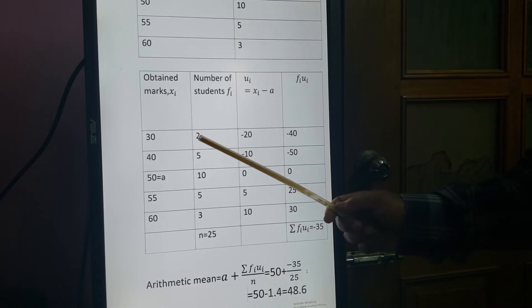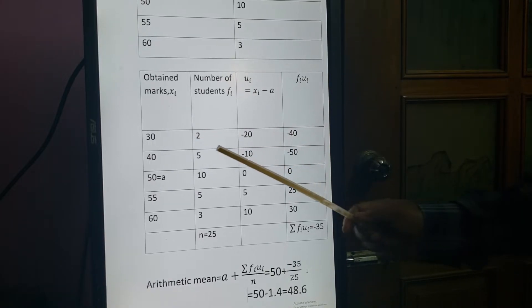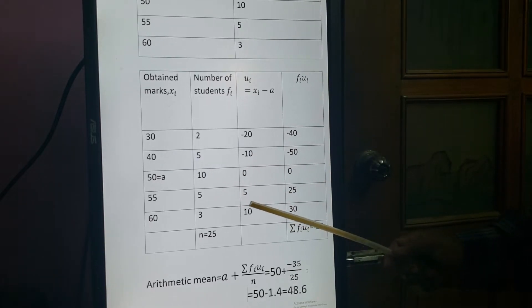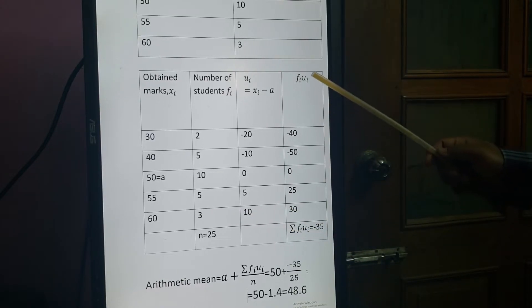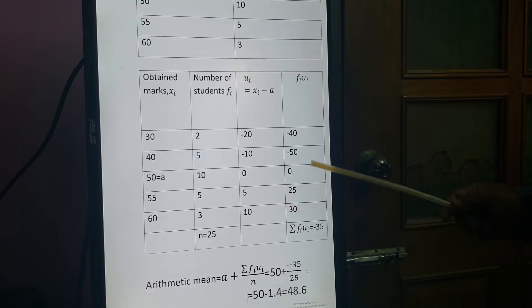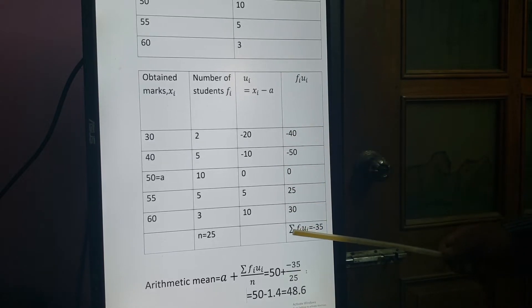Now find the FI times UI product for each row: 2 × minus 20 = minus 40; 5 × minus 10 = minus 50; 10 × 0 = 0; 5 × 5 = 25; 3 × 10 = 30. Adding all these gives summation FIUI = minus 35.